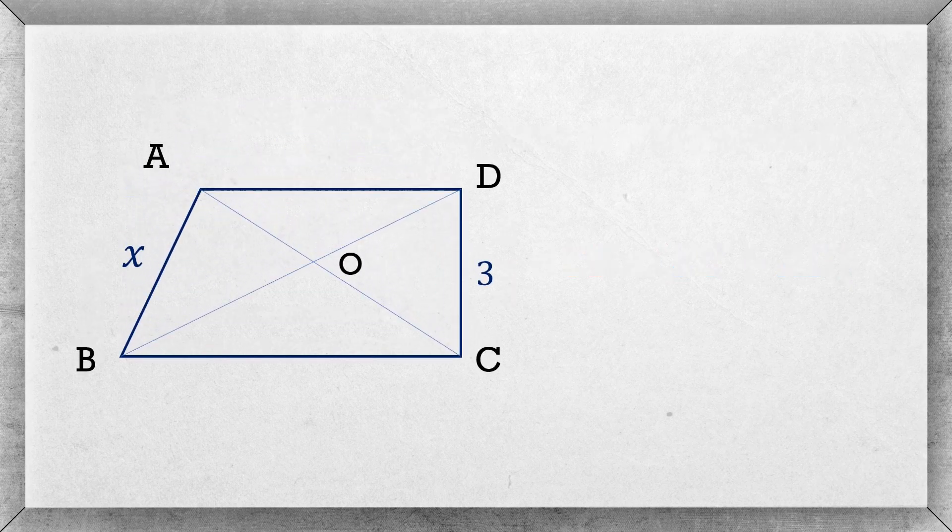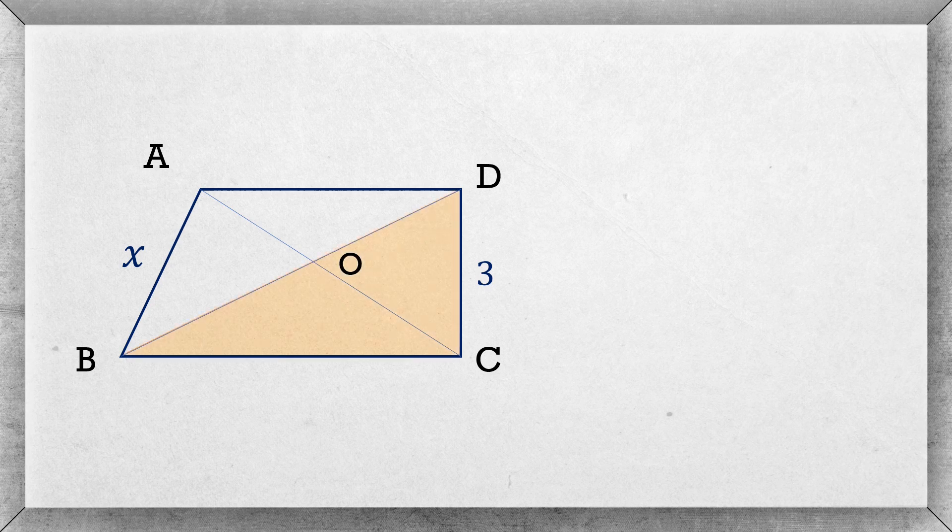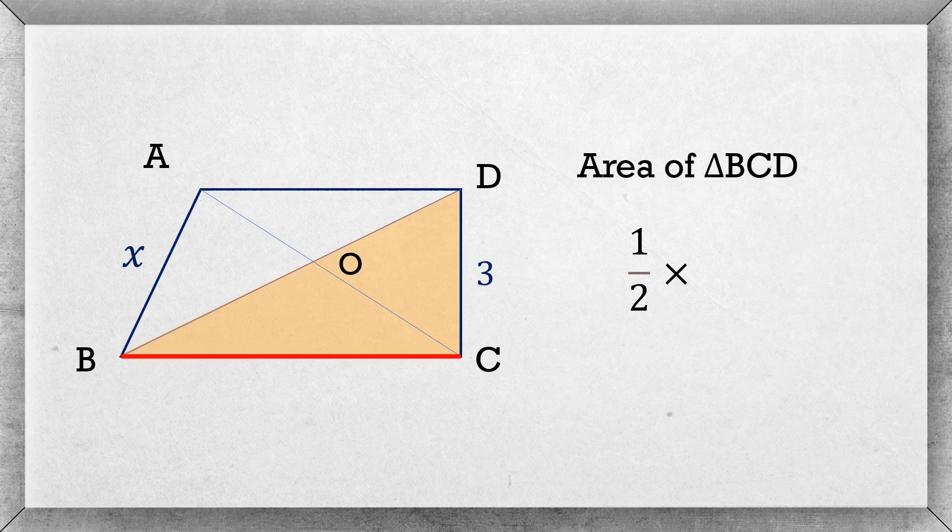To further proceed with our problem we will start with triangle BCD. BCD is a right angle triangle and its right angle is at C. We know area of a triangle is half into its base into its height. So the area of triangle BCD is half into its base BC and height CD which is 3, giving an area of 3/2 BC.